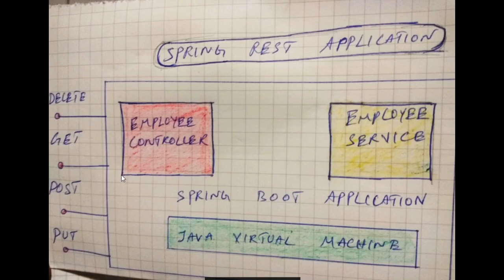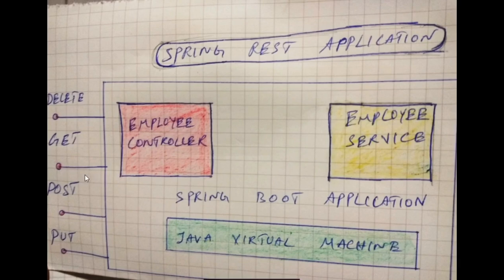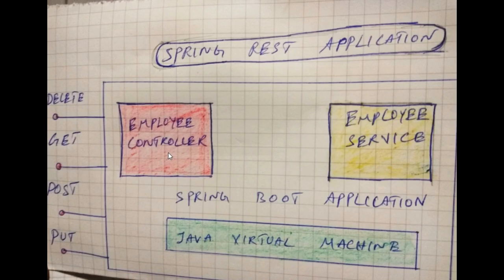You can use the curl command to hit the endpoints, or you can use Postman to trigger or invoke them. For example, you can create a POST. The JSON request body is received by the Employee Controller. Spring converts the JSON object to a DTO — a data transfer object — and then passes it to the Employee Service class.